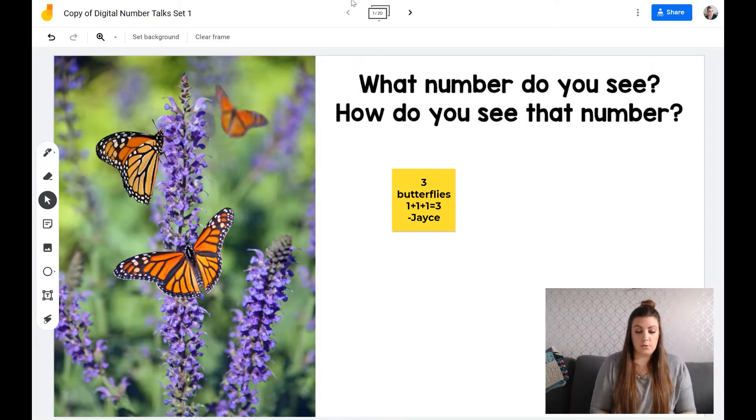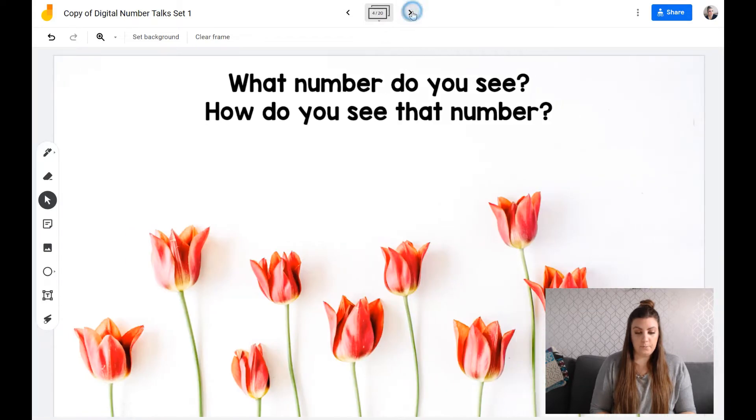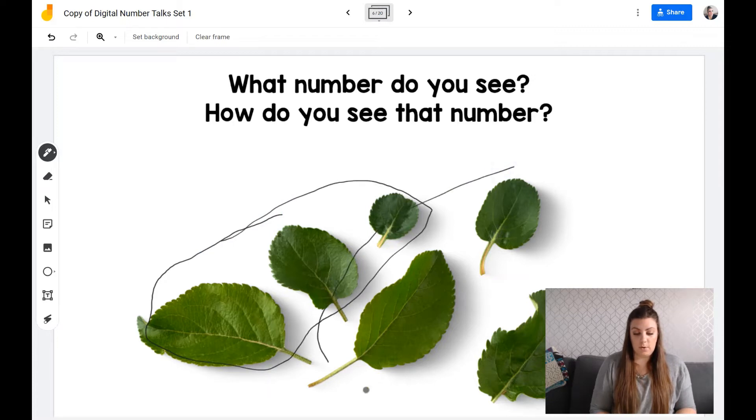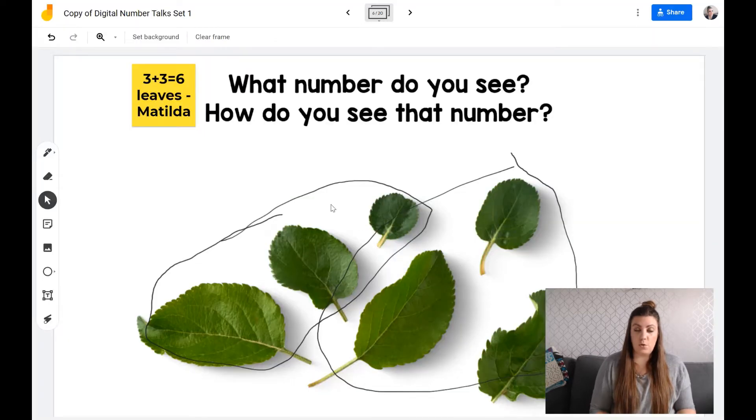What you can also do if you have one that maybe has a little bit more numbers behind it, let's say it's this one, you can also use the pen tool to circle that they saw these three plus these three made six. And then you can add the sticky note that said three plus three equals six leaves by Matilda. I don't know, I'm making up kids' names now. Matilda said that three plus three equals six leaves. And now you've circled it to actually show the math thinking.